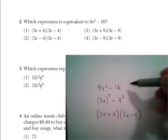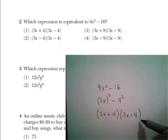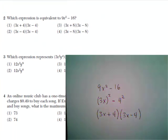So 9x squared minus 16 factors into 3x plus 4 times 3x minus 4. And looking at our answer choices, we see that number 1 matches that.